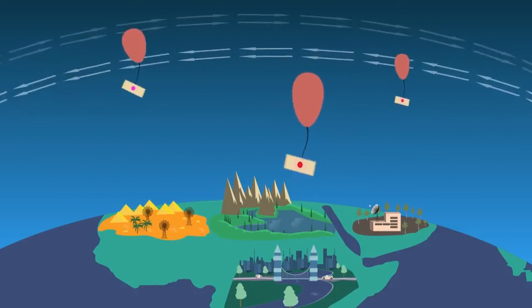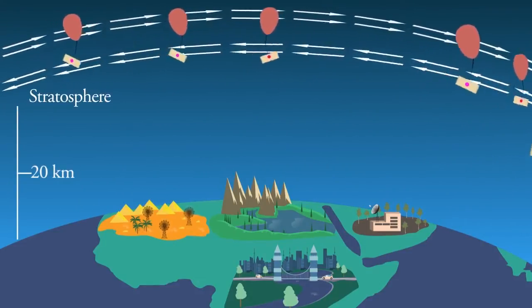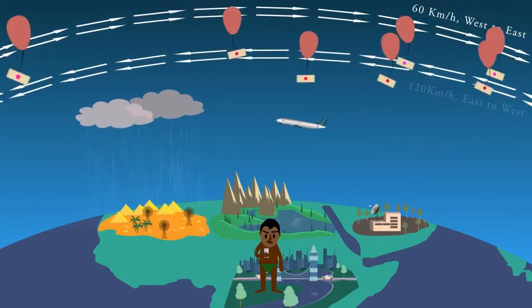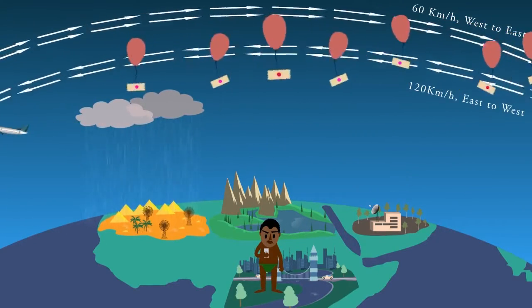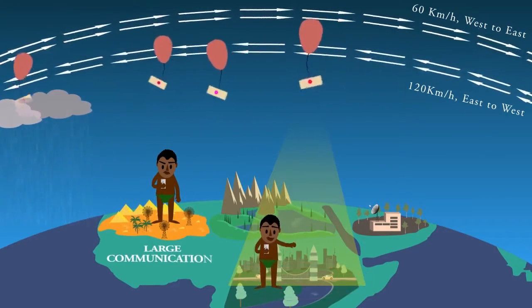The balloons travel approximately 20 km above the Earth's surface in the stratosphere. Winds in the stratosphere are stratified, and each layer of wind varies in speed and direction. By moving with a wind, the balloons can be arranged to form large communications network.